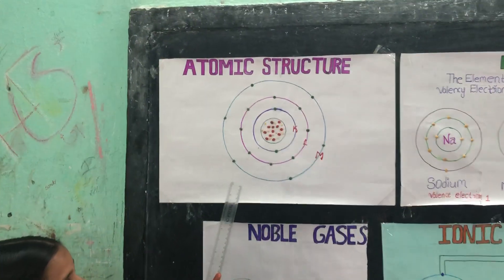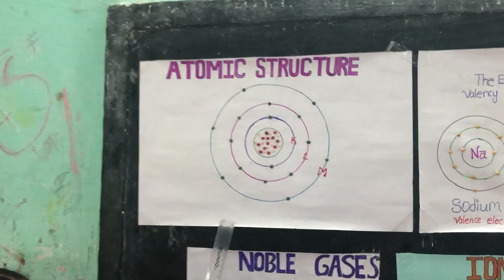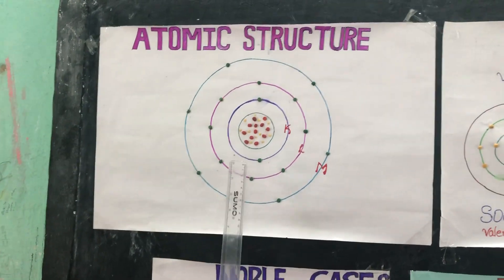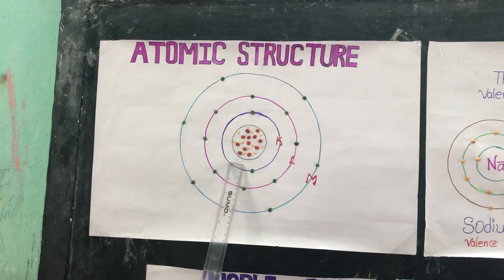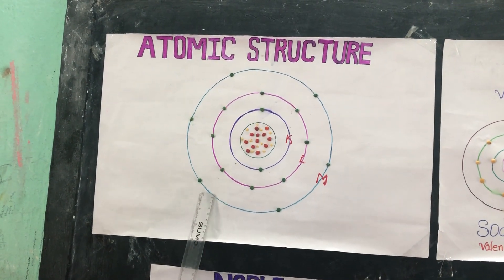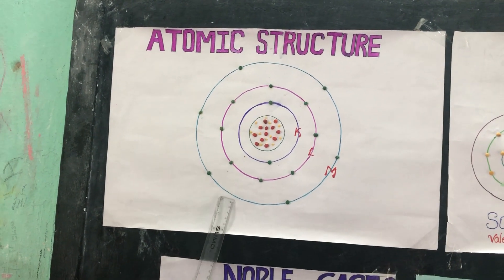Here we see atoms. In this atom there are protons, neutrons, and electrons. Protons and neutrons are inside the nucleus. Electrons are out of the nucleus.